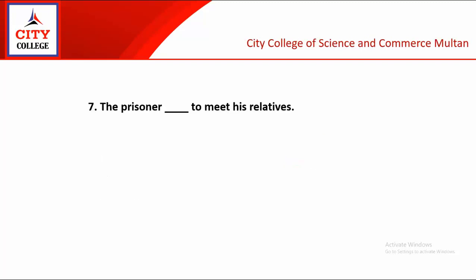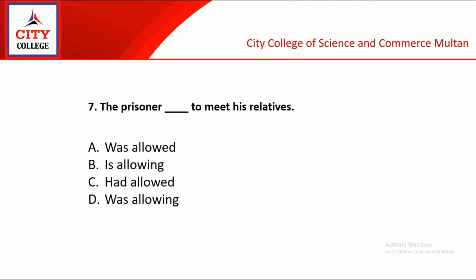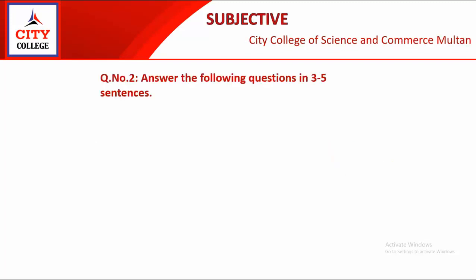7th objective: The prisoner dash to meet his relatives. Given options are was allowed, is allowing, had allowed, was allowing. Here we have a passive form. The prisoner has been allowed to meet his relatives, so the correct answer is A, was allowed.